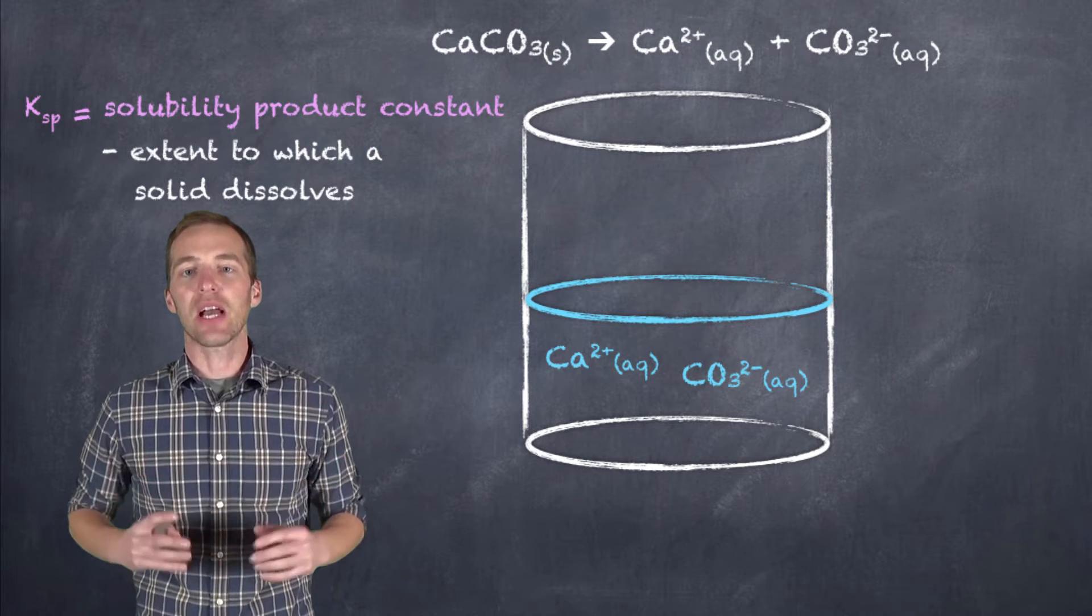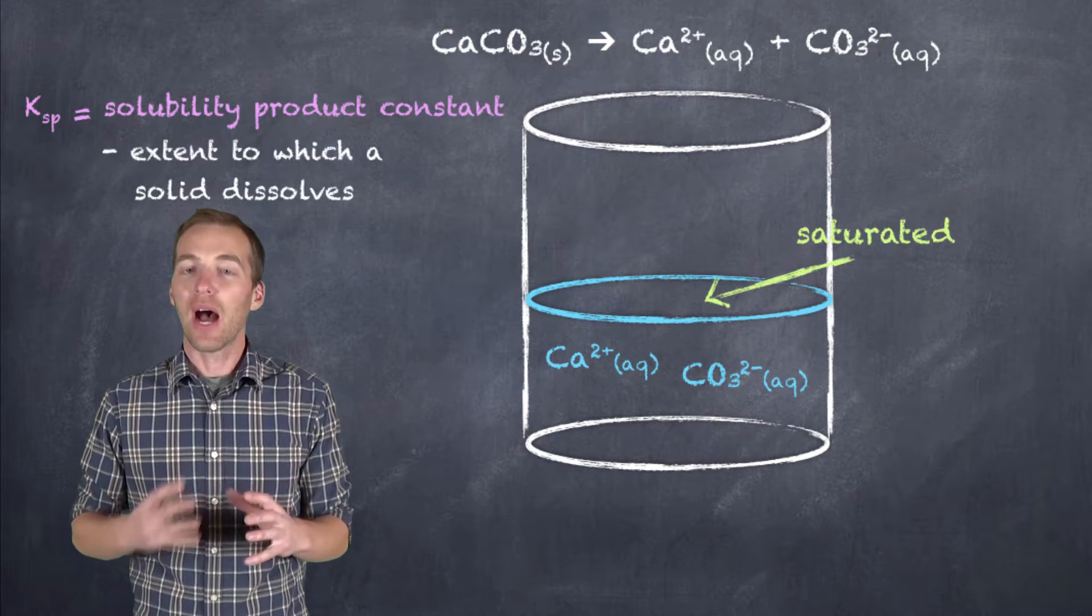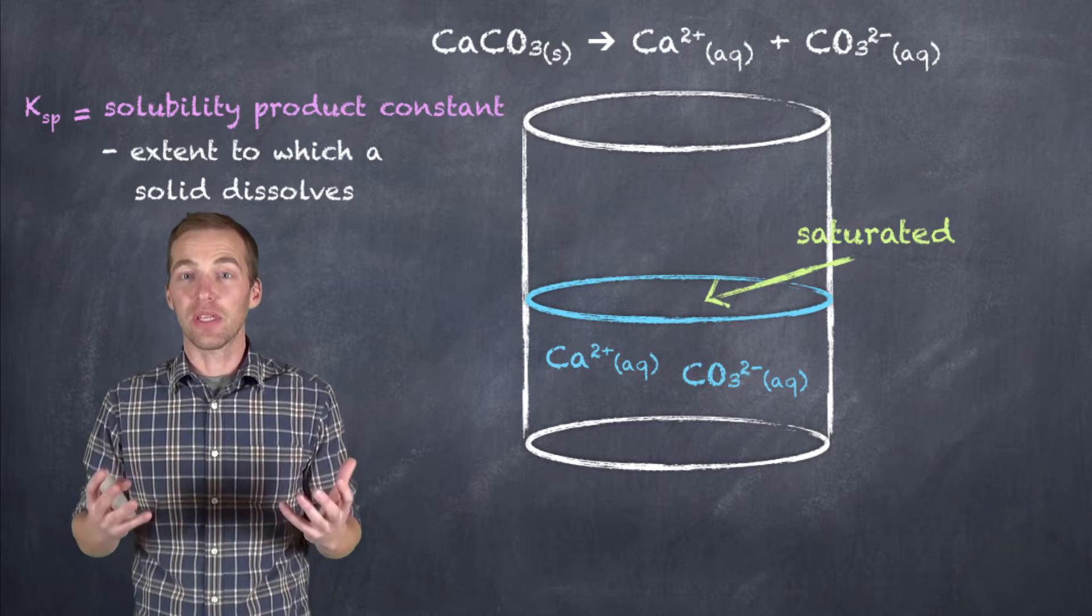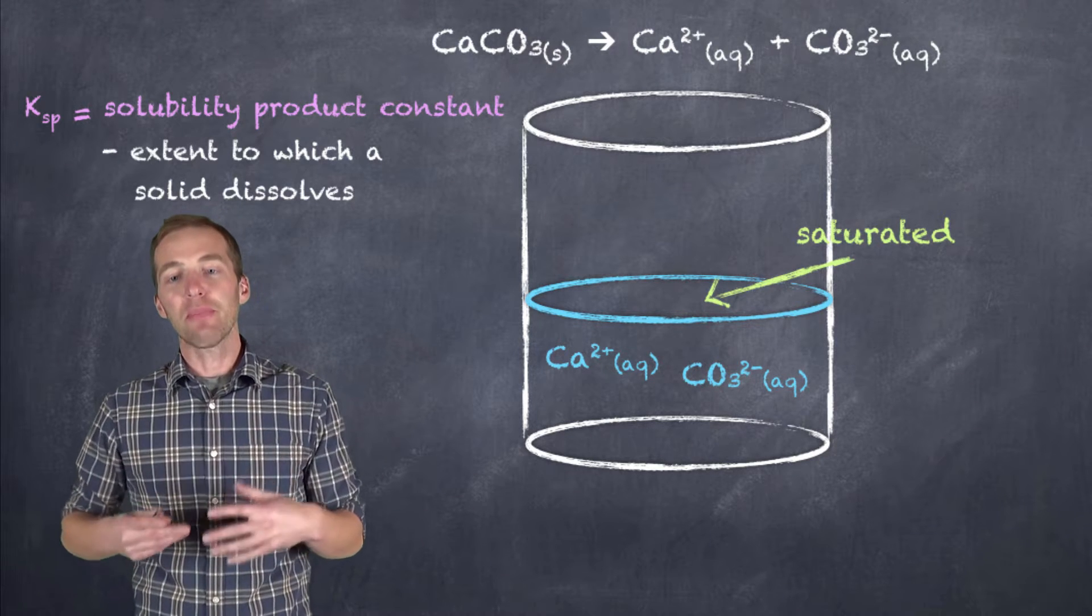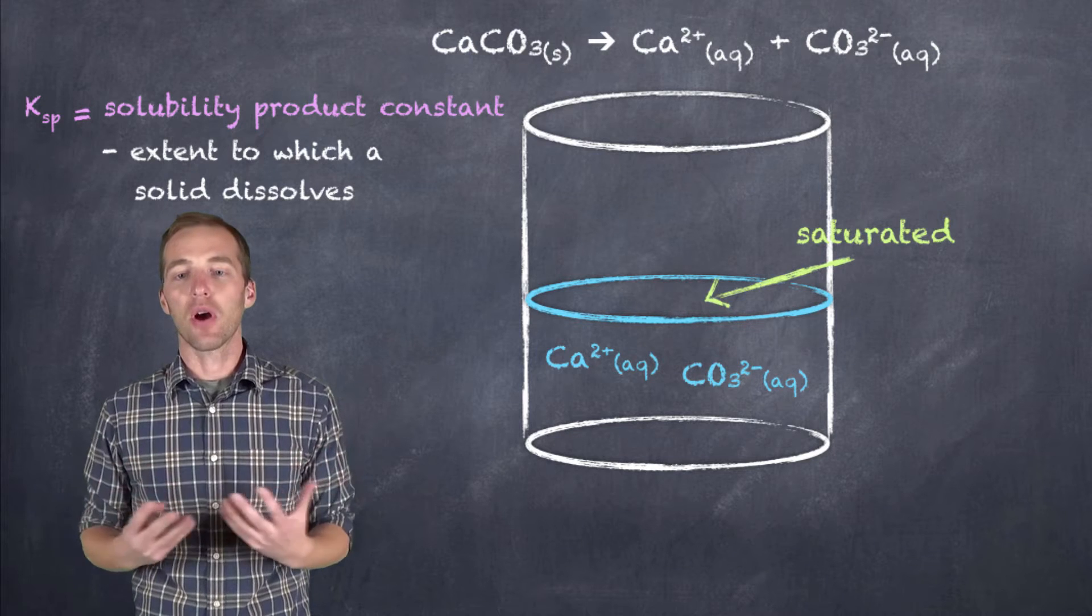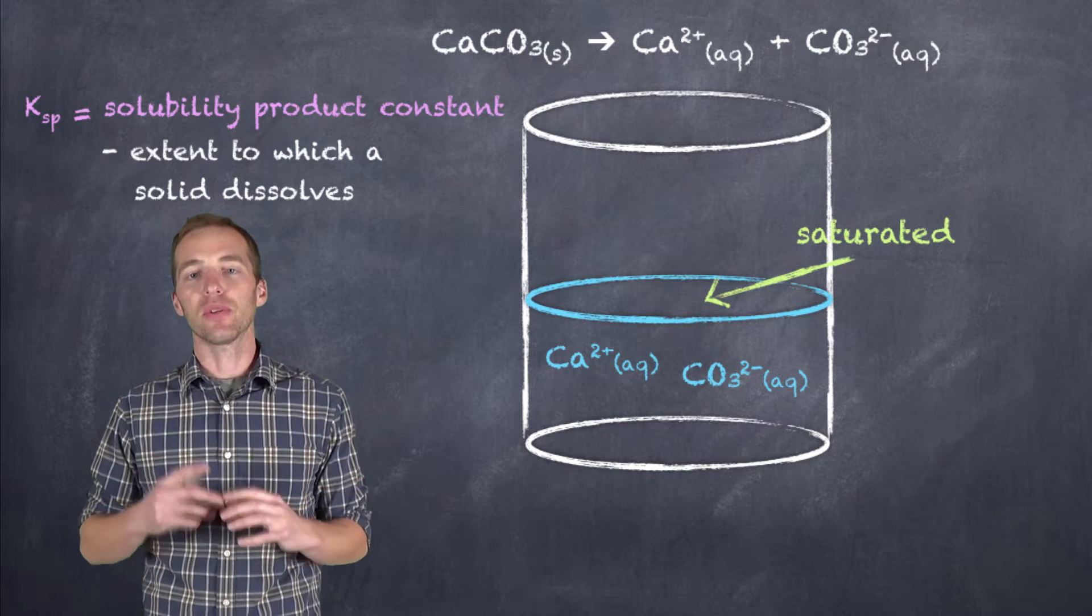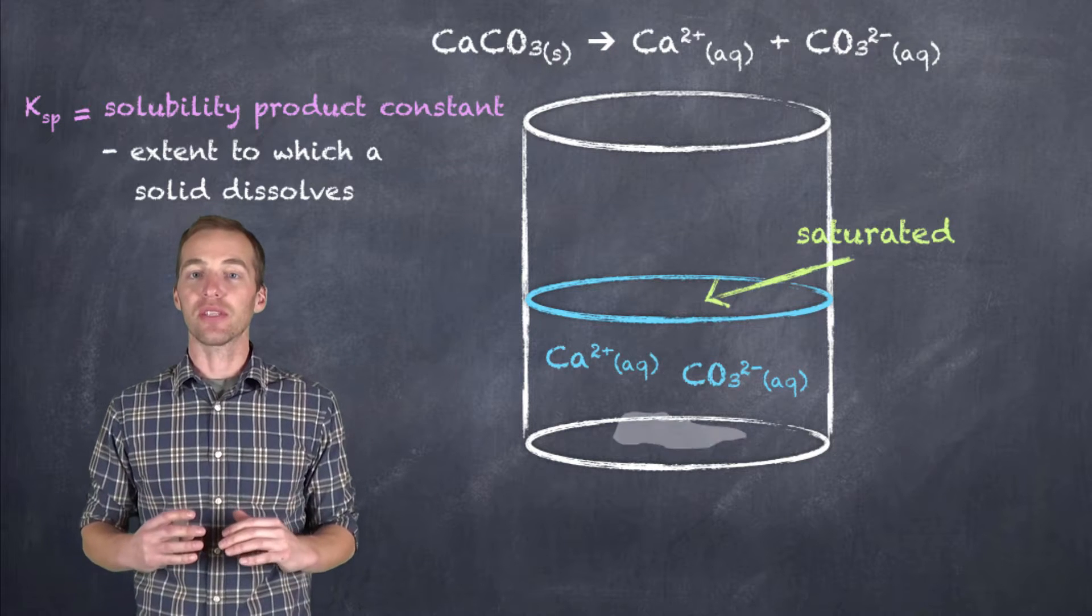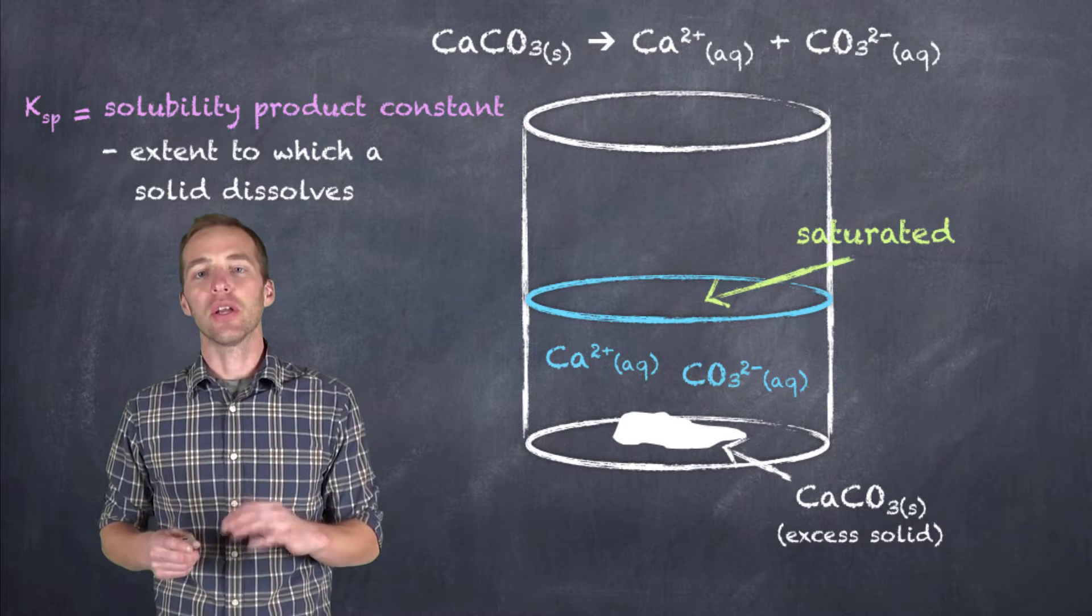And we can keep adding this calcium carbonate until such point that it becomes saturated. Now how do we know what is the concentration of these ions when the solution is saturated? Well, we're going to get into that. But if we imagine that we continue to add calcium carbonate, eventually, once we get past saturation, what we're going to start to notice is that the calcium carbonate deposits or forms a precipitate of calcium carbonate on the bottom. And that is the excess solid.